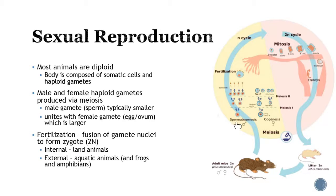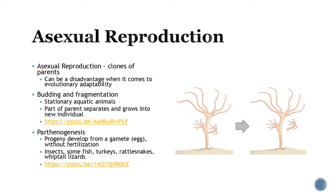Once at the adult stage, the animal goes through the process of making gametes and the process repeats. The flip side is asexual reproduction — making a clone of yourself. This can be a disadvantage because you can't adapt to changing environments; you're just making clones. It can be an advantage, like with bacteria that can quickly reproduce, but getting a combination of genes from sexual reproduction might give you a better shot.